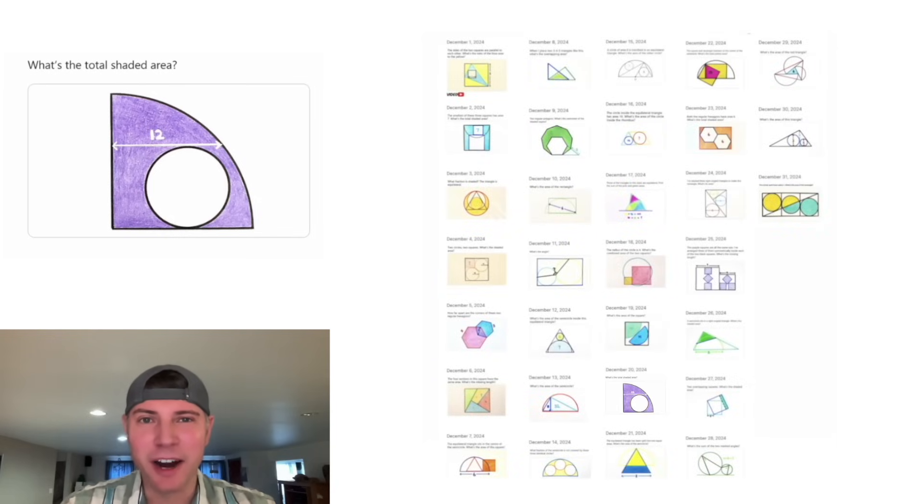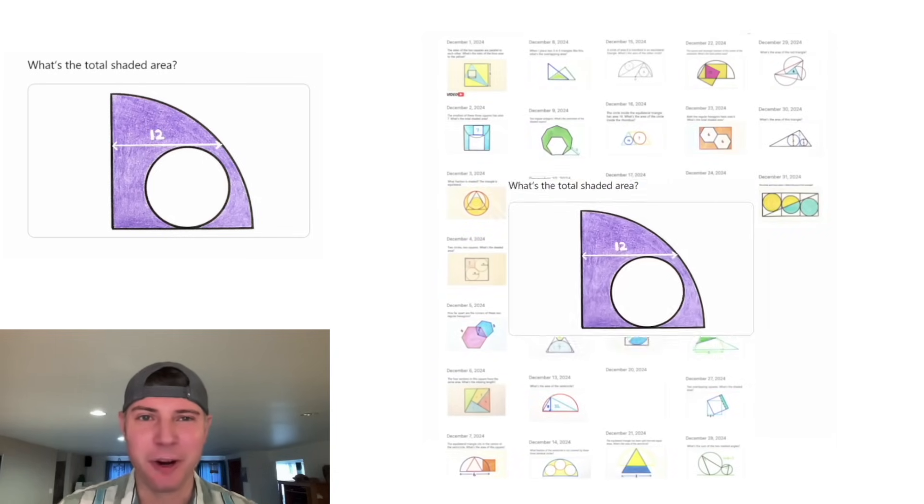This is day 20 of our AgVent calendar. For the month of December, we're gonna solve 31 Katrina Ag puzzles in 31 days.